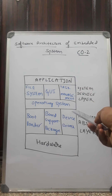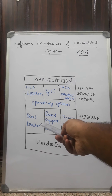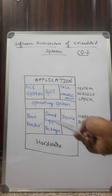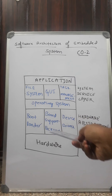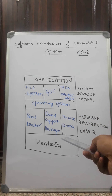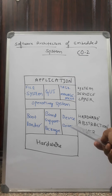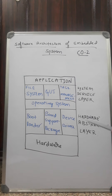Coming to the different layers, the hardware abstraction layer consists of a bootloader, board support package, and device drivers. The bootloader does initialization and loads the operating system into the hardware. The board support package enables the operating system to run on the hardware. The device drivers are the software with which the computer system or the embedded system could be interfaced with the external input-output devices.